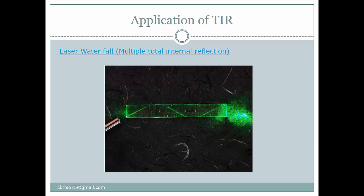The ray bounces off this water surface — it tries to go out, but the angle of incidence is greater than the critical angle, so it bounces off and repeats. That is why it follows the path of the water instead of going straight out. Similarly, light bounces off the plastic or transparent surface because each angle is greater than the critical angle, and the angle of reflection equals the angle of incidence.